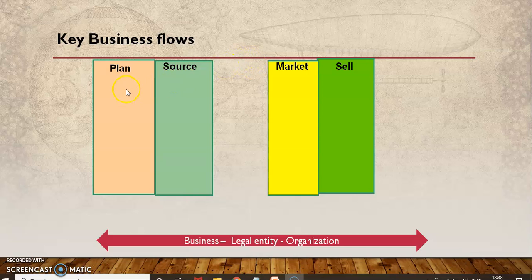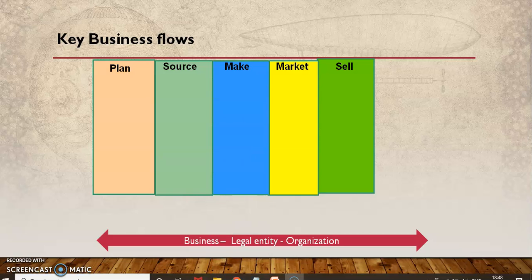Once you have the legal entity in place, you can start with the process. You need to have a plan. Sourcing is where, if it's a retail business, you procure the goods and market and sell them. If it's a manufacturing company, you make the product and then market and sell it. Even after sales, not all products can be sold and forgotten — there is something called warranty. For example, a mobile phone has a warranty, and if something happens you need to support the product.